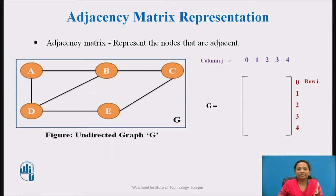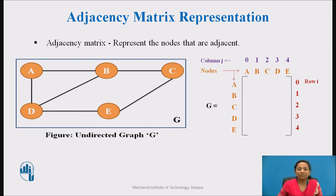Adjacency Matrix Representation: An adjacency matrix is used to represent the nodes that are adjacent to one another. In a graph, two nodes are said to be adjacent if there is an edge connecting them. In an adjacency matrix, the rows and columns are labeled by graph vertices. If n nodes are present in the graph, then an n by n matrix is needed to represent the adjacency matrix of that graph.